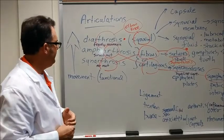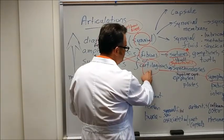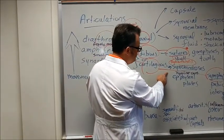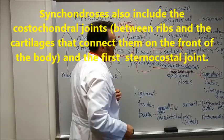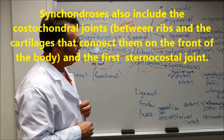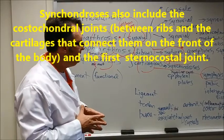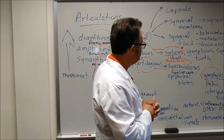If we look at a cartilaginous type joint, this can be a synchondrosis, which are the epiphyseal plates. Hyaline cartilage is what helps to generate new bone in these synchondrosis.